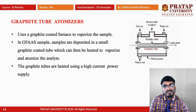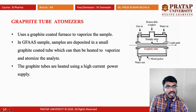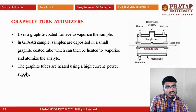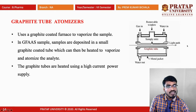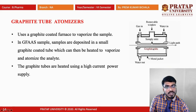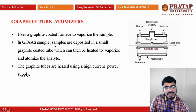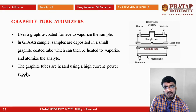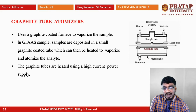This is the graphite atomizer. Here we have a sample inlet from which the sample is inserted. There are two inlets: a gas inlet and a water inlet. The green color arrow shows the light path, and at the bottom of the light path we have the graphite tube, along with a metal jacket. It mainly uses a graphite-coated furnace to vaporize the sample. In the graphite tube atomizer, samples are deposited in a small graphite-coated tube, which can then be heated to vaporize and atomize the analyte. The graphite tubes are heated using a high-current power supply.